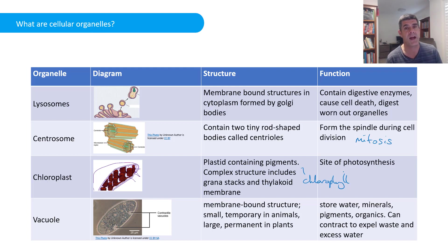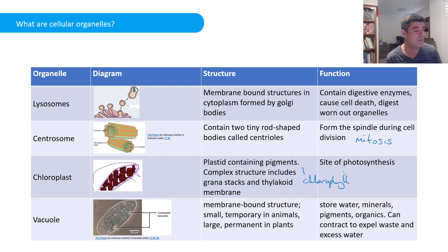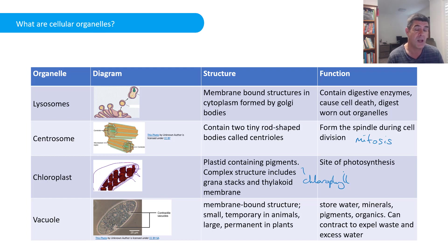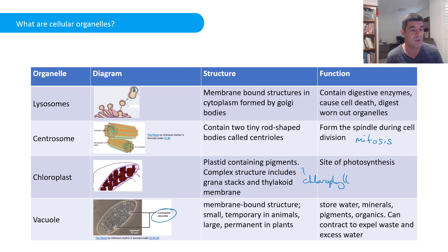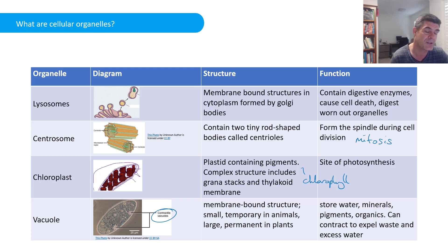The last organelles to discuss are vacuoles. In animals they tend to be very small and temporary, but in plant cells they are large and permanent structures. They are used primarily for storage of water, minerals, organic materials, or pigments. For some freshwater organisms, contractile vacuoles can expel water and wastes from the cell as they contract and squeeze, releasing contents from the cell.